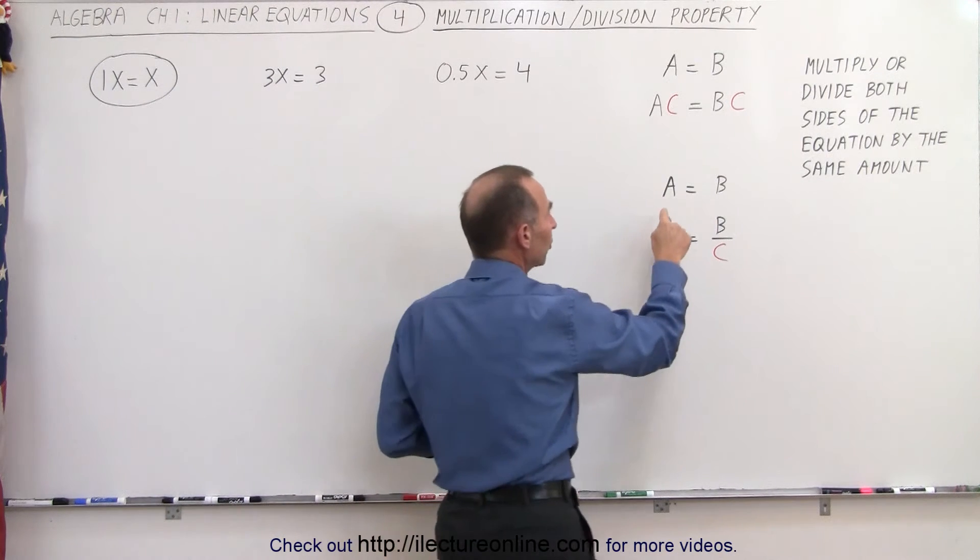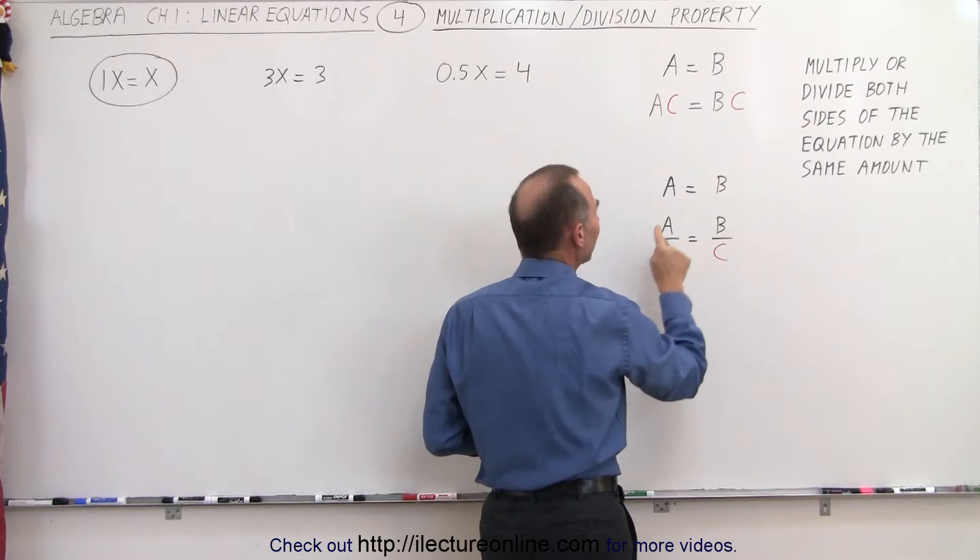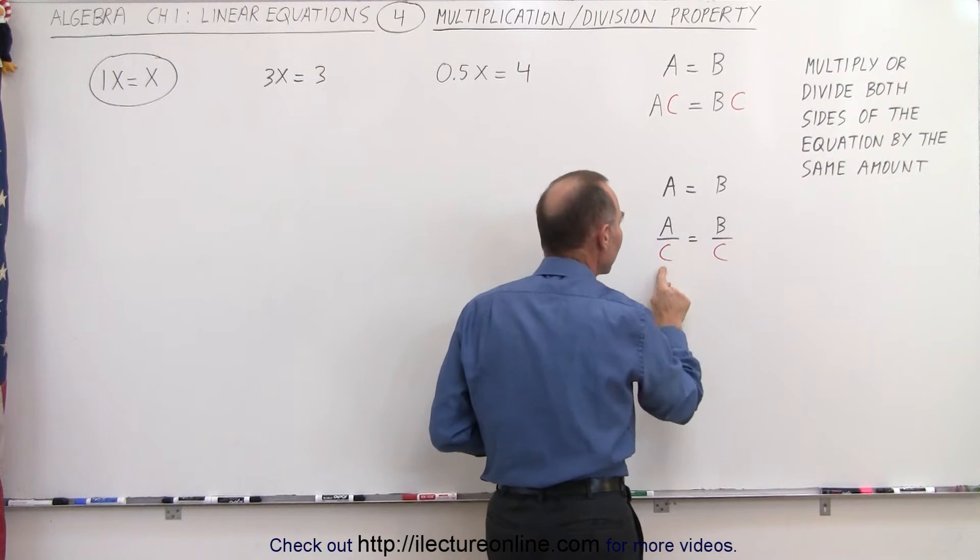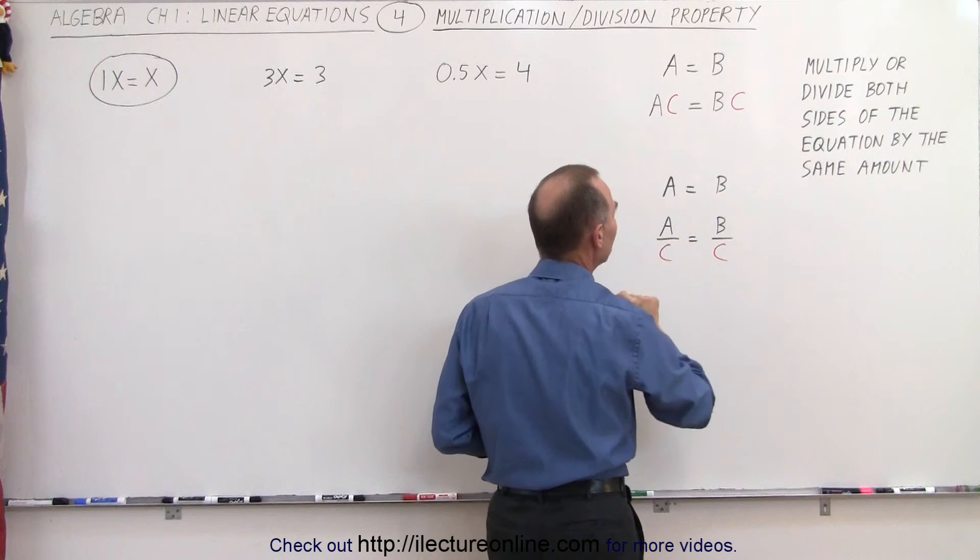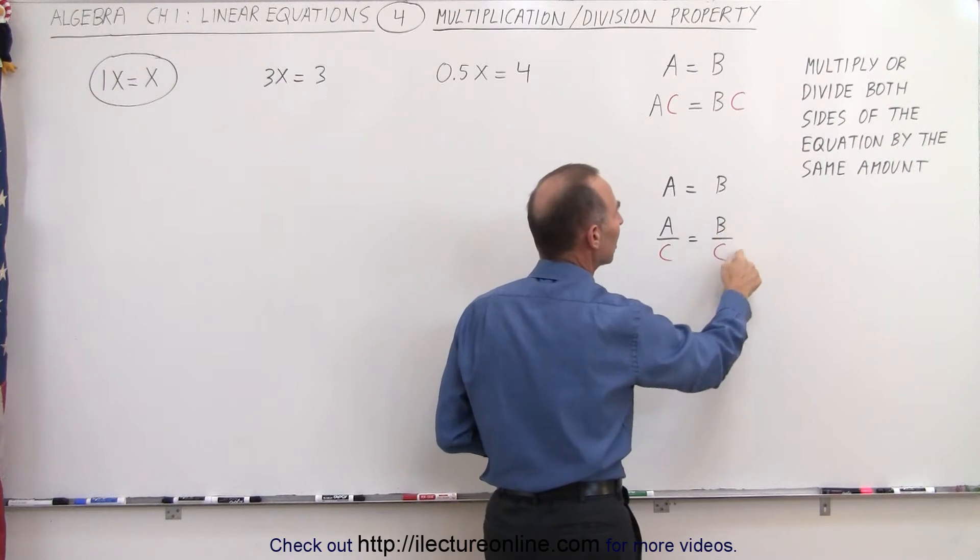Notice that we also can start with A equals B and then divide both sides of the equation by the same number, in this case the number C, so that A over C must therefore equal B over C.